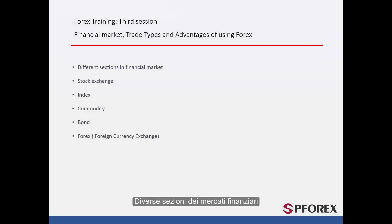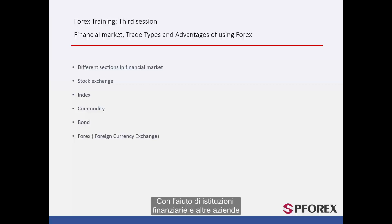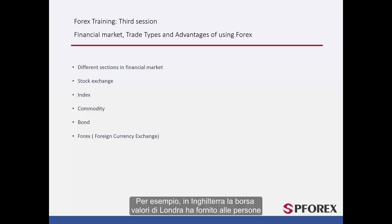Different Sections of Financial Markets: All financial markets have different sections. Here we have broken it down into five. The first section is called a stock. With the help of financial institutions and other companies, people can either buy or sell these stocks all over the world. For example, in England, the London Stock Exchange has provided people with the chance of buying and selling stocks.